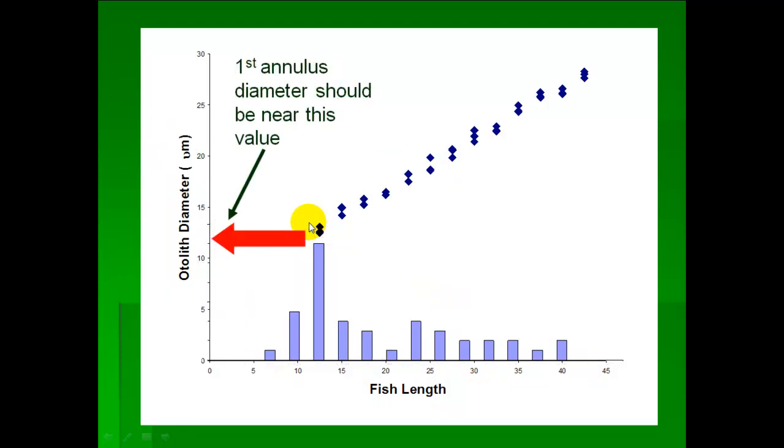So whatever size that otolith is right now in the winter, that's the average size of where you're going to find the first annulus. And so if you just see what that size is on the y-axis, that should be about the size of the first annulus, where the first annulus should be relative to the focus. Again, think about this is in the winter, and so the annulus, say the otolith of these young of the year fish is running about 11 or 12 micrometers.